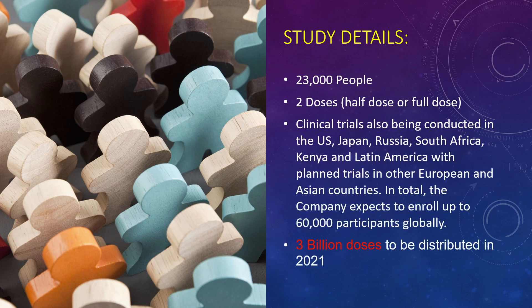Clinical trials for the AstraZeneca vaccine are also being conducted in the US, Japan, Russia, South Africa, Kenya, and Latin America. They hope to enroll up to 60,000 participants globally and plan to distribute 3 billion doses by the end of 2021.